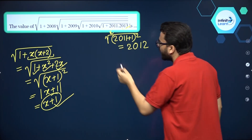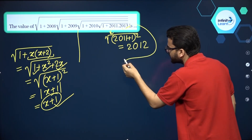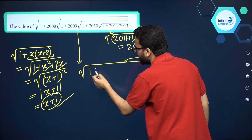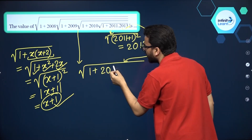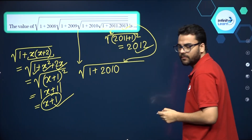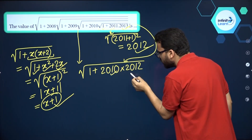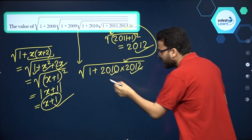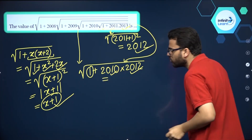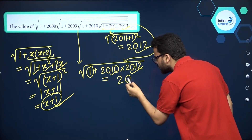Let us further simplify. Taking the next square root, what are we left with? Square root of 1 plus 2010 and then 2012 from the previous result. You see it is again of the same form X into X plus 2, and plus 1 is there inside this square root. So it must give you X plus 1 — so 2010 plus 1, meaning it will give you 2011.